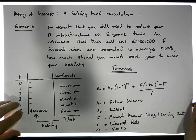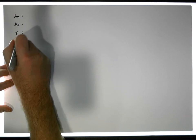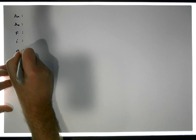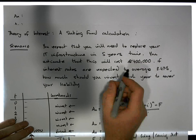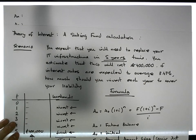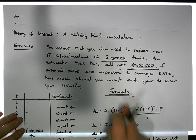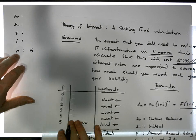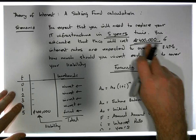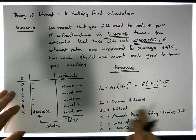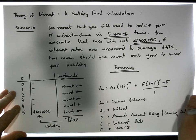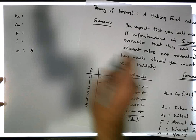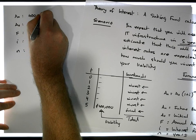In our situation, let's see what information we have in relation to A_n, A_0, f, i, and n. In five years time we will require 400,000 euros, so the number of years n is five. The future balance A_n should be 400,000 euros in five years time — A_n always represents the future balance at any particular moment, so A_n equals 400,000 euros.